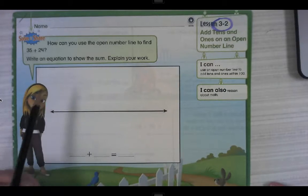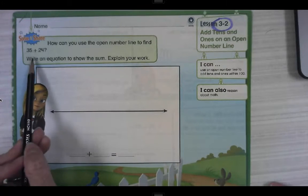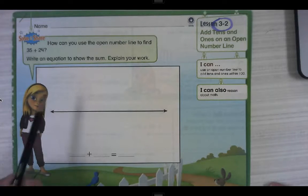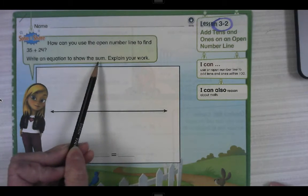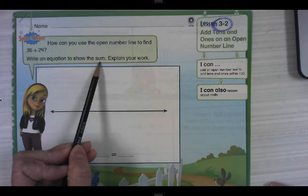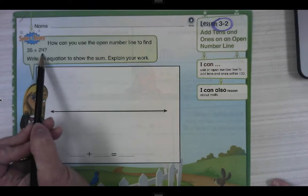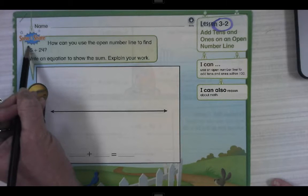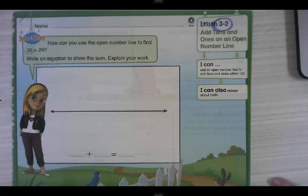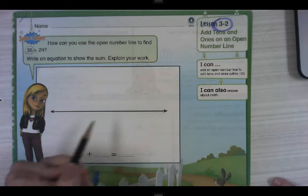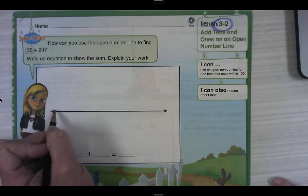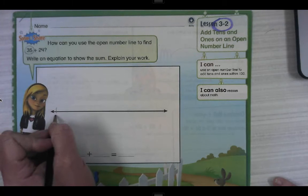Now an open number line is just a line without any numbers on it. So we can turn this number line into any number line in the world. This question says, how can you use the open number line to find 35 plus 24? And then we're going to write an equation to show the sum. Remember the sum is the answer. And we're going to explain our work. Okay, our first step. When we add, it's often easier to start with the greatest addend. So 35 and 24, which one of those is the greatest? 35 is greatest. Okay, so when we add, we're going to move this way on the number line. Our numbers are going to get bigger. So we need to start over here on the left side. 35.